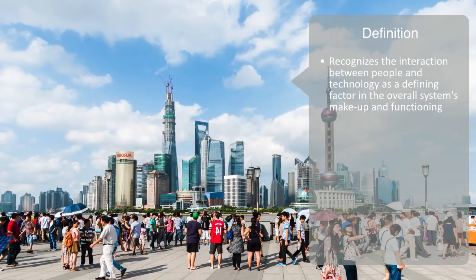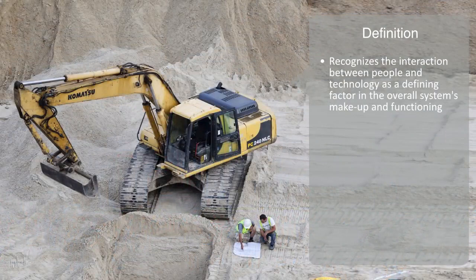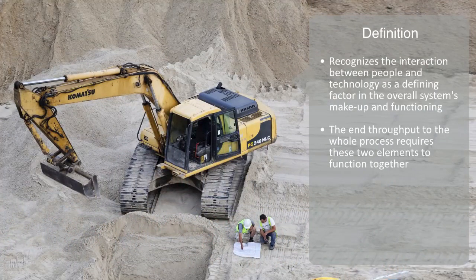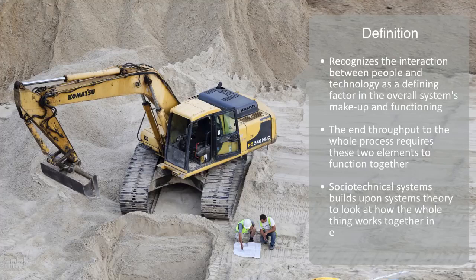The ultimate functioning of almost all technologies will involve the interaction between people and technology. Whether we're talking about a wheelbarrow, a car, or a subway station, the end throughput to the whole process requires these two elements to function together. And socio-technical systems builds upon systems theory to look at how the whole thing works together in effecting a joint outcome.